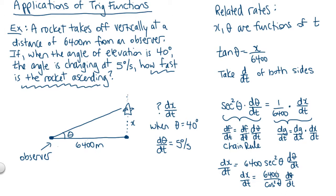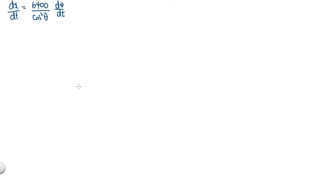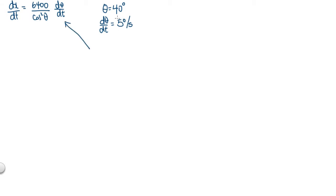Recalling the information from the question, we want dx/dt when theta equals 40 degrees and theta is changing at 5 degrees per second. We need to think about units: dx/dt is how quickly a distance is changing, so we want meters per second. We do not want any degrees coming up in our answer. So 5 degrees per second is not the right unit to use — degrees per second would cause degrees to appear in our answer, which isn't appropriate.